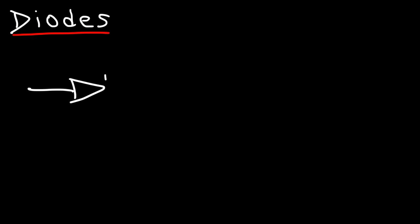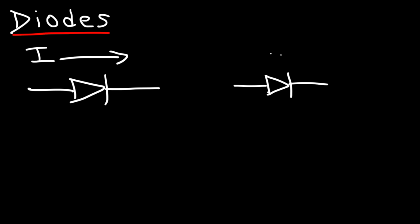This is the electrical symbol of a diode. Conventional current will flow in the direction of the arrow — it won't flow in the opposite direction. The only way you can make it flow in that direction is if you apply a very high voltage, because any insulator can become a conductor if the voltage applied is very high. There's always a breakdown voltage to an insulator.